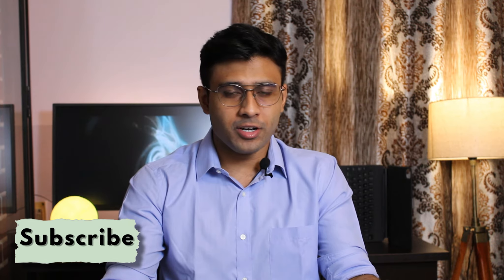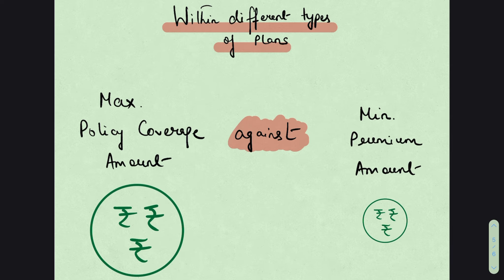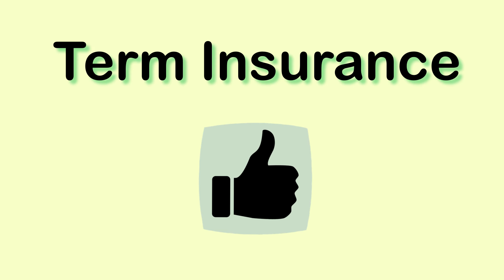Now, which out of these three do I recommend and why? Remember the structure and the objective mentioned at the beginning. A life insurance product has a person paying premiums, and if the person dies, the insurance company reimburses the nominee with the coverage amount. The objective is to get the maximum coverage amount against payment of the least premiums. Out of these three types, only the term plan fulfills both the structure and the objective, and that is the one I recommend.